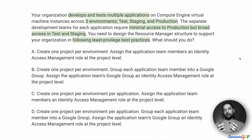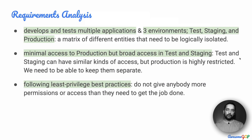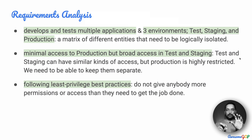In this requirement, there are many teams involved. Each of those teams are working with multiple applications and they need to go through multiple stages. We need to make sure that they are isolated and also follow the principle of least privilege when it comes to identity and access management. The requirement analysis shows us that there's a matrix of different entities — the projects, the applications, and the environments — and each of them needs to be logically isolated.